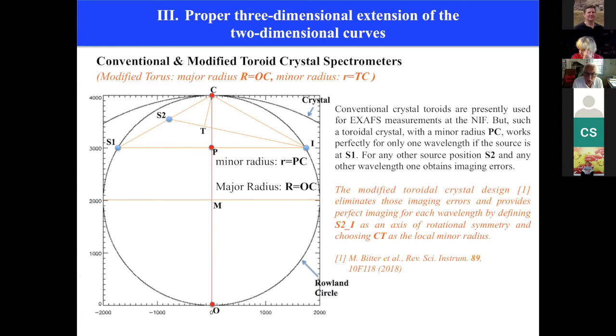So that CD, which is the minor radius of the torus, is essentially the radius of curvature up-down from the drawing plane, and the axis from S1 to I is an axis of rotational symmetry for the incident and reflected rays.